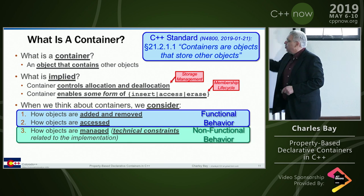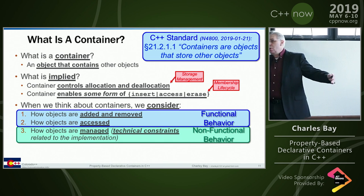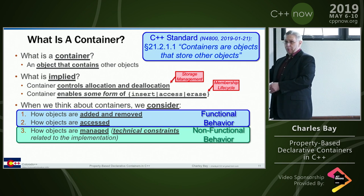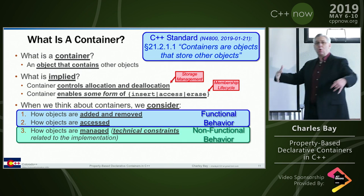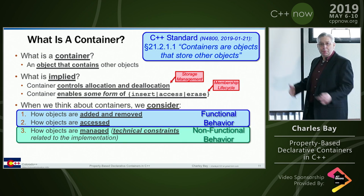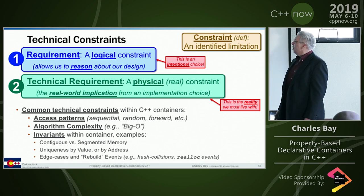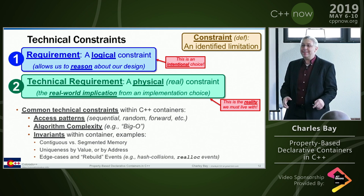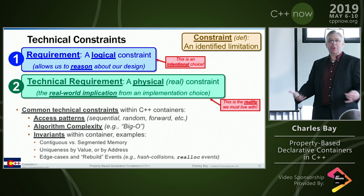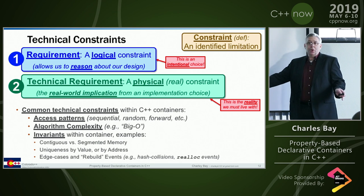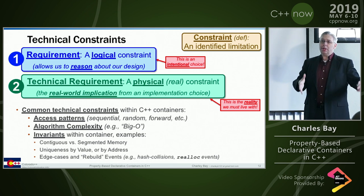Non-functional behavior is dealing with the management and constraints of the container you chose to employ. If you have contiguous memory with O(1) access, that's different from allocating nodes or inserting and removing from a list - that's non-functional behavior. That's going to be criteria we use to judge the suitability of the container. The functional behavior is getting stuff in and out, and that's how we drive our design. The requirement is functional; the technical requirement comes from implementation decisions. There's only so much addressable memory, only so much you can do paging across nodes.